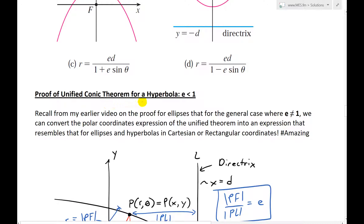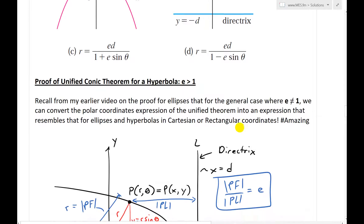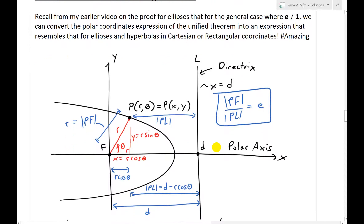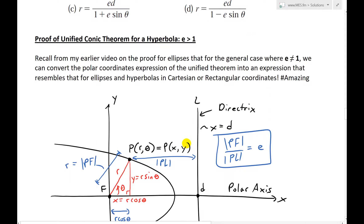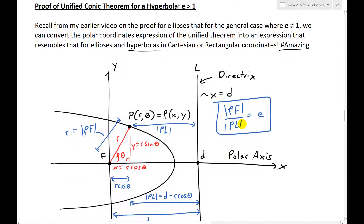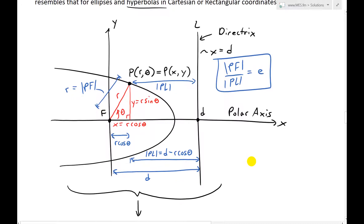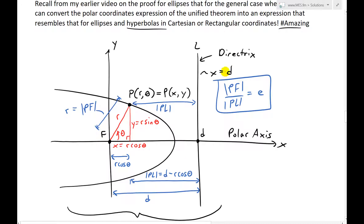Now let's look at the proof of the unified conic theorem for a hyperbola where e is greater than 1. To save some time, recall from my earlier video on the proof for ellipses that for the general case where e is not equal to 1, we can convert the polar coordinates expression of the unified theorem into an expression that resembles that for ellipses and hyperbolas in Cartesian coordinates. So make sure to watch my earlier video on ellipses — I'm just picking up where I left off.